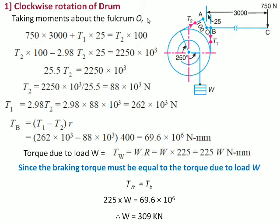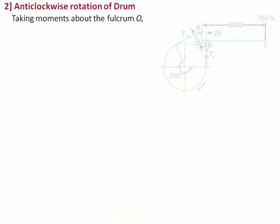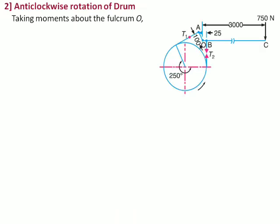Similarly, we will be solving for the anticlockwise rotation of the drum wherein T1 and T2 positions will be swapped. Now T1 is on the other side and T2 is on the right side. So T1 will be the new tight side and T2 is the new slack side. So here 750 multiplied by 3000 plus T2 multiplied by 25 should be balanced by T1 multiplied by 100.